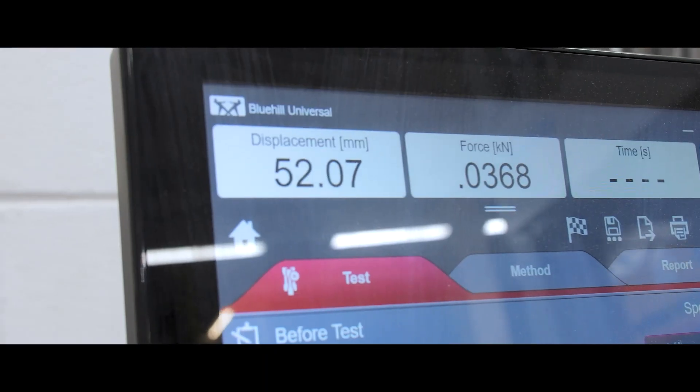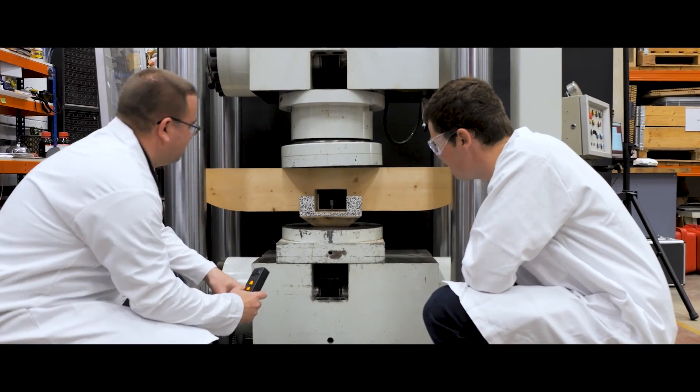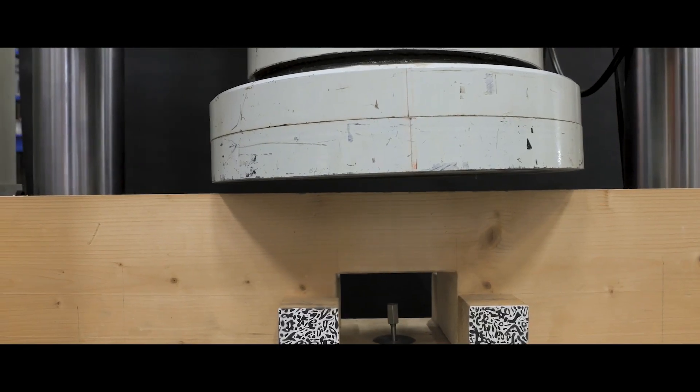This is our structures lab where we have a range of specialist testing machinery to help you explore the properties of materials and structures, for example our 200 tonne tension and compression machine.